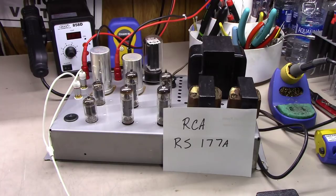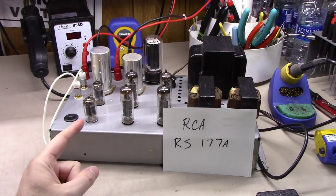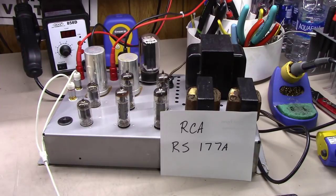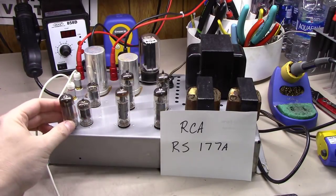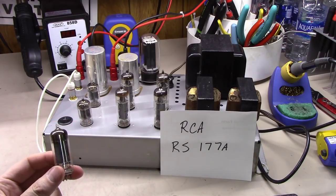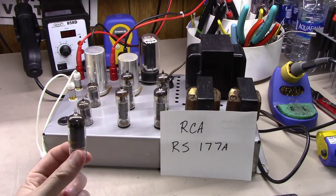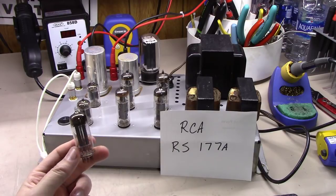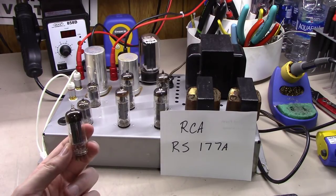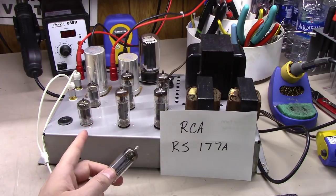This thing uses a 6CG7 in the very front end of it. It's a little bit bigger than what I've got in there now, but it's a fairly weak tube from a gain standpoint. It has a gain of 20 on one side, which gets used for the first stage of gain, and the second side gets used as a phase splitter for the push-pull 6BQ5s.